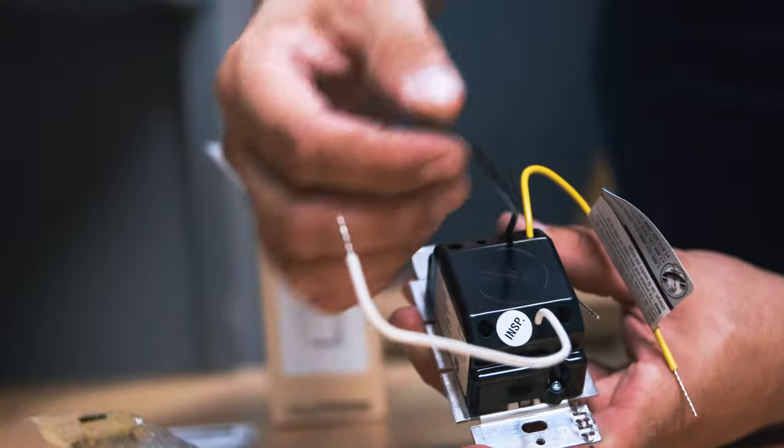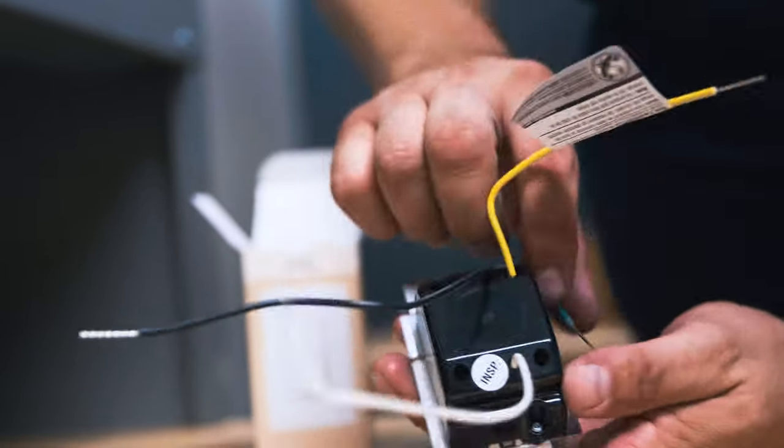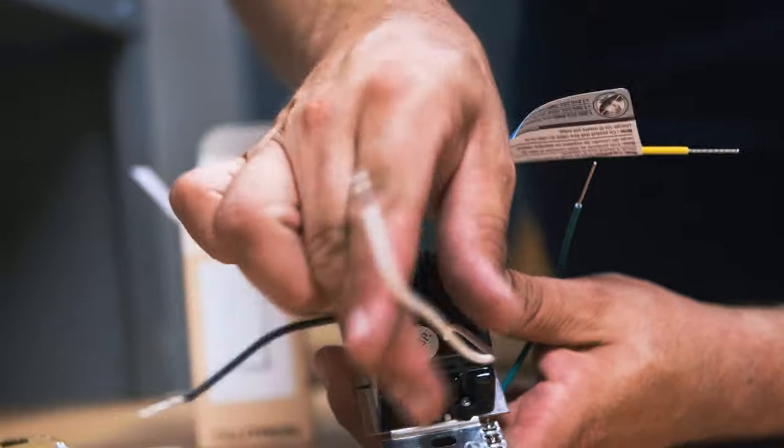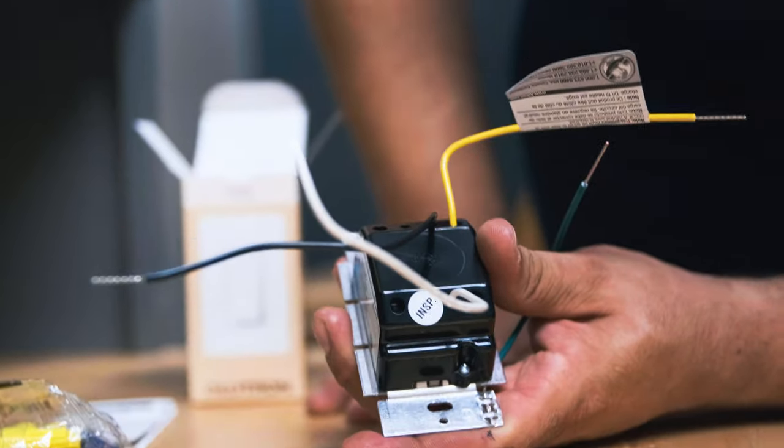This one has a hot. This goes to your line side. This yellow wire goes to your load. There's that green for ground. And then this one requires a white neutral connection in the box. So this is for the ELV.